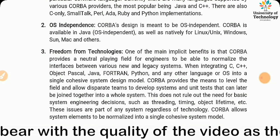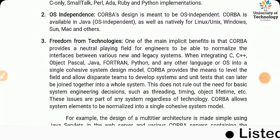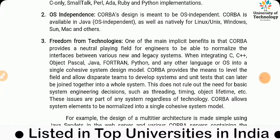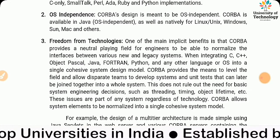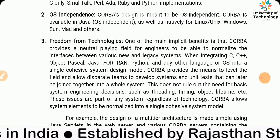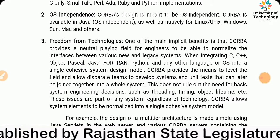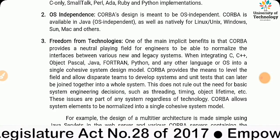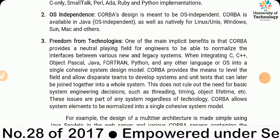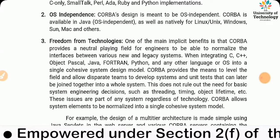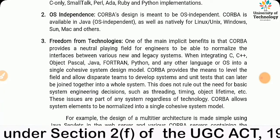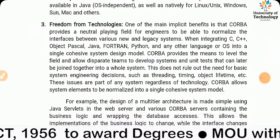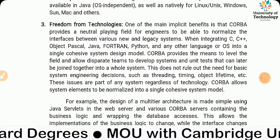When integrating C, C++, Pascal, Java, Fortran, Python, and any other language or OS into a single cohesive system design model, CORBA provides the means to level the field and allow separate teams to develop systems and unit tests that can later be joined into a whole system. This does not rule out the need for basic system engineering decisions such as threading, timing, and object lifetime. CORBA allows system elements to be normalized into a single cohesive system model.